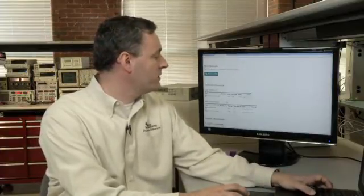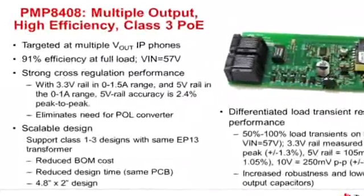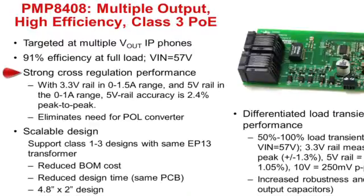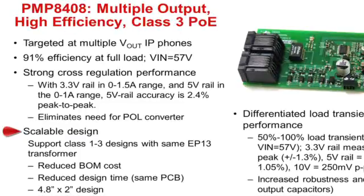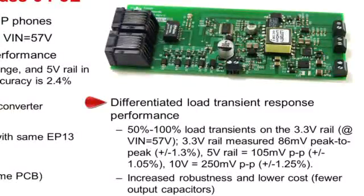Moving back to the presentation, I would like to talk to you a little bit about that particular reference design, the PMP 8408. The reason I want to highlight this design is it has very high efficiency from multiple output end equipment. The combined 91% efficiency and strong cross-regulation performance will help you eliminate a point-of-load converter. It also is a scalable design — we searched for a Class 3 design, but we could assume we have three models of our IP phone: a Class 3, a Class 2, and a Class 1, and this design could be used for all three. It allows you to use a low-cost EP13 transformer across all of the platforms. It also has differentiated load transient response performance, which can further reduce your cost and give you an increased robustness.